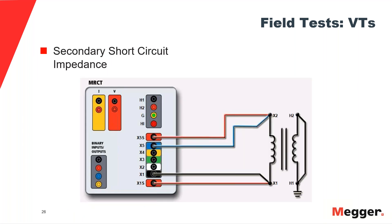Finally, the secondary short-circuit impedance measurement allows us to determine the copper losses of the VT and calculate certain parameters used to model the VT, enabling us to predict its performance in the field.